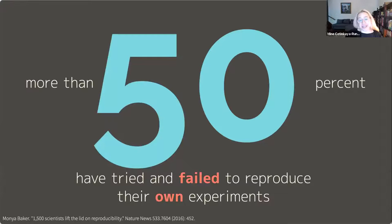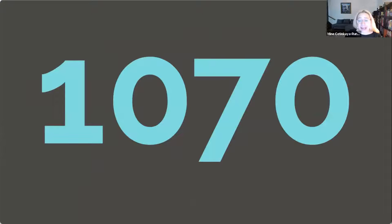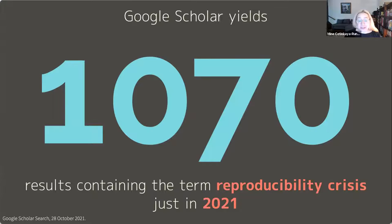But 50% is the percent of those same researchers who said they've tried and failed to reproduce their own experiments. Now this study wasn't just about computational reproducibility, but still, these numbers are pretty painstakingly high. And 1,070 is the number of Google Scholar results if you search for the phrase 'reproducibility crisis' just in 2021 — I actually did this search last night. That's a high number.